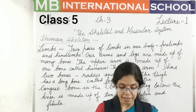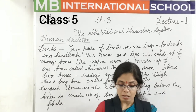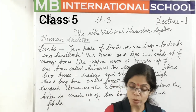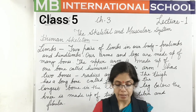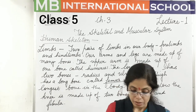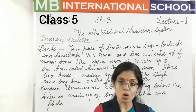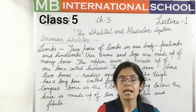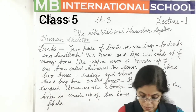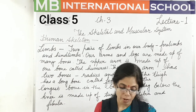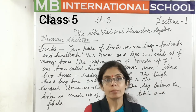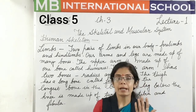So to summarize the limbs: forelimbs have the upper arm with a single bone called the humerus, and the lower arm with two bones - radius and ulna. Hind limbs have the thigh with the femur, the longest bone, and below the knee are the tibia and fibula. Students, fingers are not made up of one single bone - they are made up of many small bones.